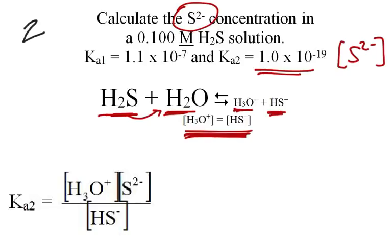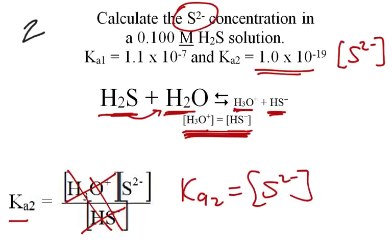So if those two are equal, we can come back to our Ka2 expression and see the [H3O+][HS-], that's this one and this one. If they're equal, then they cancel out. And if they cancel out, we can see that our Ka2 is equal to the S2- concentration. And that's going to be true. It doesn't matter what this concentration is. Because of the equilibrium, if they ever want to know what's the S2-, it's just the Ka2, and that's all, no calculations involved.